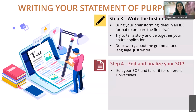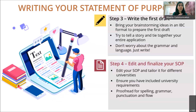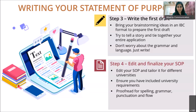Once you're done with the first draft, leave it aside for two to three days. Then come back and start editing. Pay attention to university-specific requirements, make sure you include sophisticated vocabulary and professional language — the admissions committee looks at how well you communicate academically. Proofread for spelling, grammar, and punctuation, ensure smooth flow between paragraphs, and check the word limit, which is typically 500 to 1,000 words.